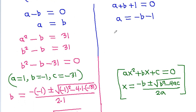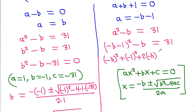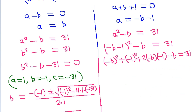For the second case, using a squared minus b equals 31 with a equals minus b minus 1, we substitute to get (minus b minus 1) squared minus b equals 31, which expands to b squared plus 1 plus 2b minus b equals 31.